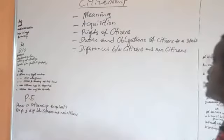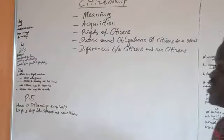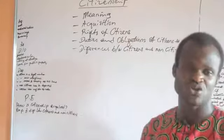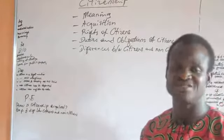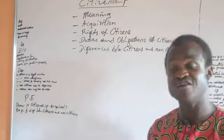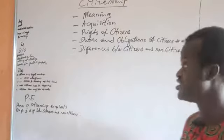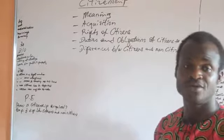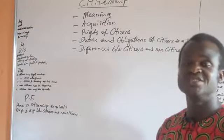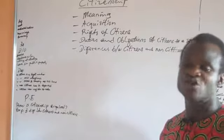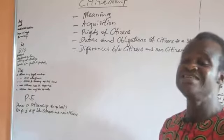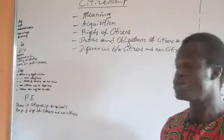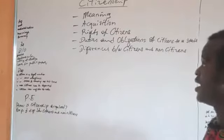Then, the duties and obligations of citizens. Citizens have the duty and obligation to pay taxes — payment of taxes to the government. That is where the government gets part of the money used in running the nation. Also, obedience to law — whatever law is made by the country, the citizen is obligated and has the obligation to obey such laws.